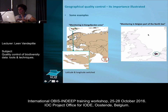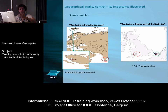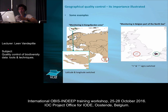Another one — 'Monitoring in the Belgian part of the North Sea', so I'm expecting my dots to be only there. What I'm seeing is a lot of dots on the other side. What happened is that the plus and minus signs got switched. Again, very easy if you plot this visually. Of course, these visual checks only work if you have geographically defined or bounded datasets. But if you know data have been collected within a specific area, this check can really help you verify the information.